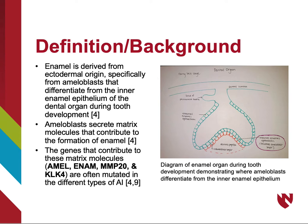The diagram at the right labels where in the dental organ the inner enamel epithelium becomes ameloblasts, which will eventually secrete matrix molecules that contribute to the formation of enamel. These matrix molecules are genetically regulated by genes, specifically AMEL, ENAM, MMP20, and KLK4. These genes are the ones that appear to be most often mutated, disrupting proper enamel development and resulting in various types of AI.